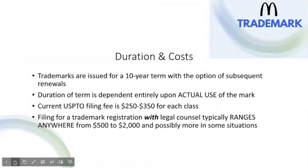Trademarks are initially granted for a 10-year term. However, you must file declarations of use between years 5 and 6 and 9 and 10 in order to maintain the registration. Trademarks are to a degree perpetual in duration so long as the actual use of the mark is continued and the proper declarations are filed. The overall cost of obtaining a trademark is relatively low compared to other IP tools such as patents. You should expect to pay anywhere from $500 to $2,000 per registration depending upon the complexity of the mark and the number of potential conflicting marks. The current USPTO filing fee is $250 to $350 for each class in which you seek protection for your mark.